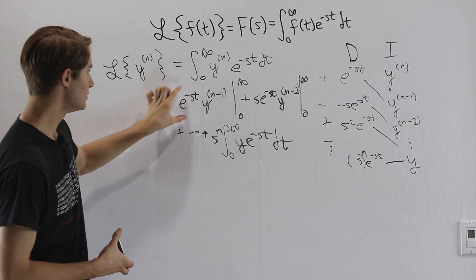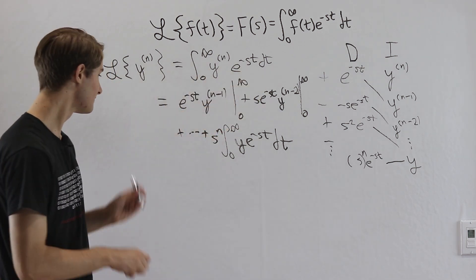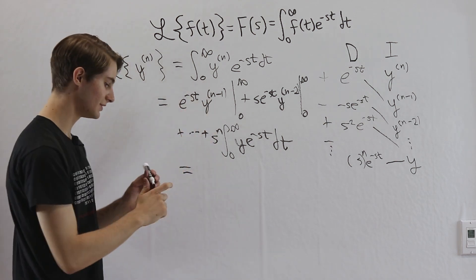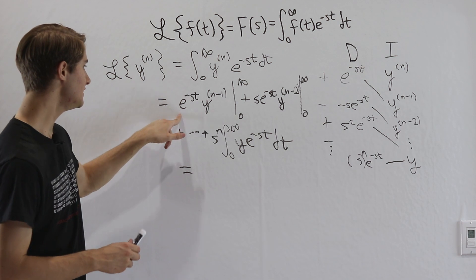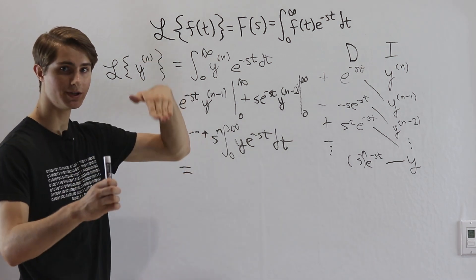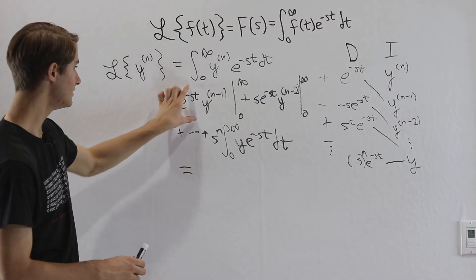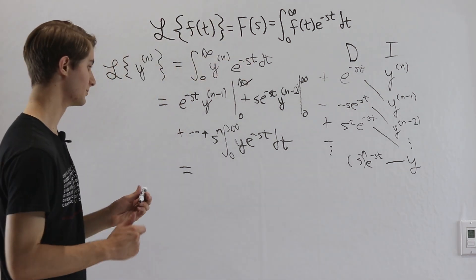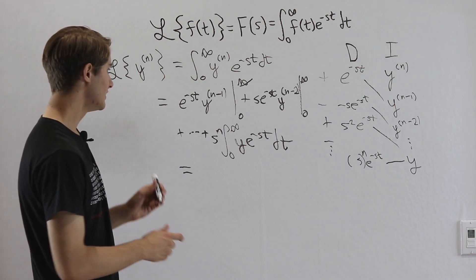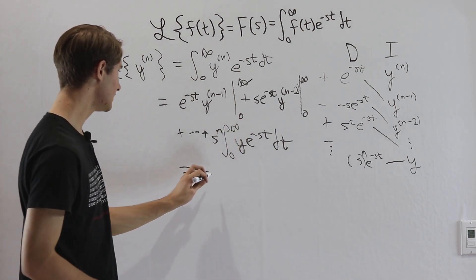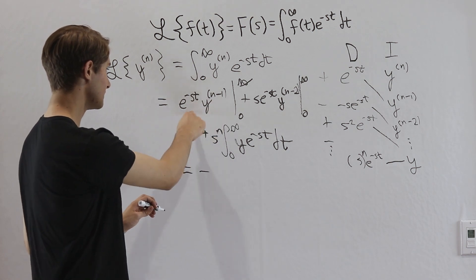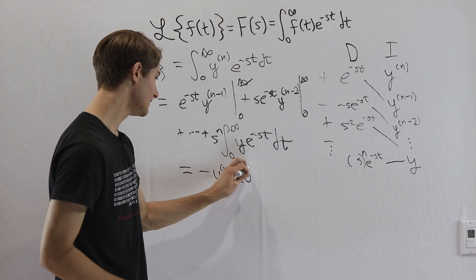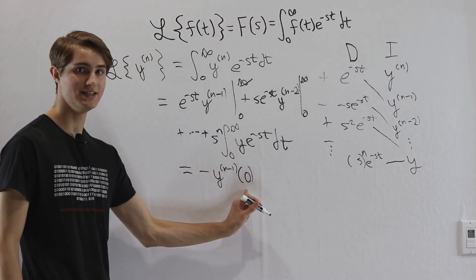Now we want to evaluate each of these parts. Looking at e to the negative st times the (n−1)th derivative of y: as t approaches infinity, e to the negative st gets really, really small, going to 0 — otherwise the Laplace transform would not exist. So that part goes to 0. For the lower bound, we subtract: e to the 0 is 1, so we just get the (n−1)th derivative of y evaluated at 0.